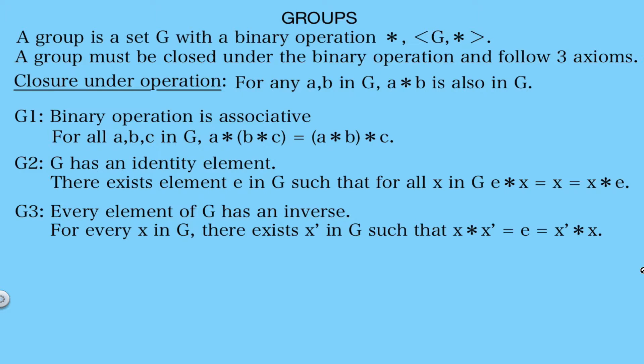Now notice that the definition does not require the operation to be commutative. A group that has a commutative operation is called an abelian group. So an abelian group is slightly more restrictive in its definition. Now that you've seen the definition, you might be wondering, why is this important?